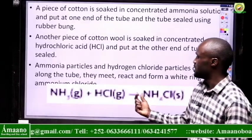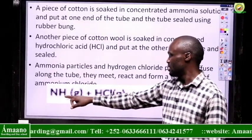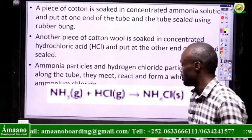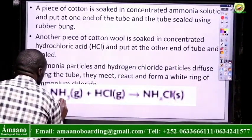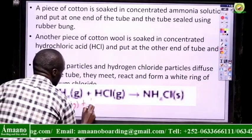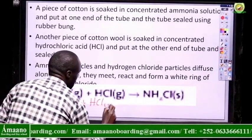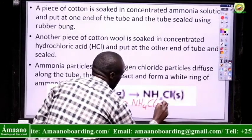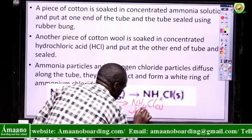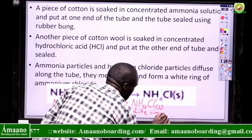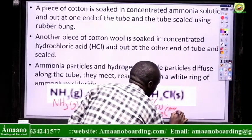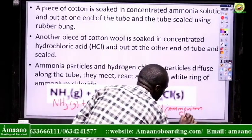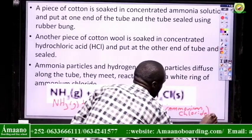When the two gases meet, the following reaction occurs: ammonia reacts with hydrogen chloride to give ammonium chloride. Ammonium chloride is a solid, and it appears as a white ring inside the tube.